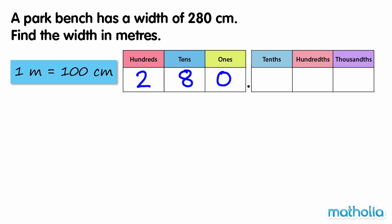So to convert from centimetres to metres, we need to divide by 100. We can divide by 100 by shifting the digits in the place value chart two places to the right.